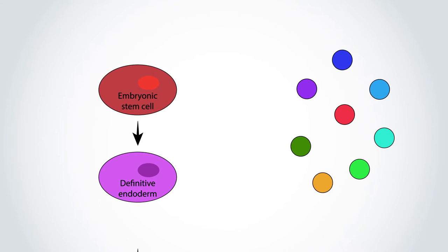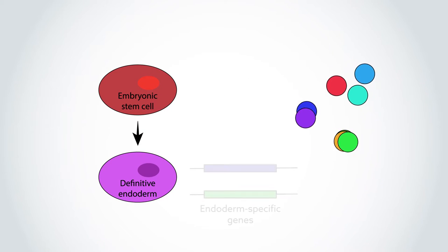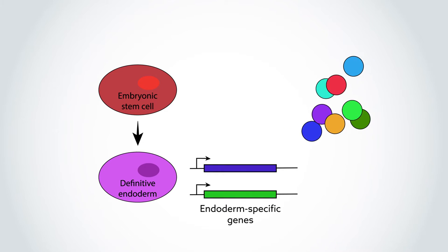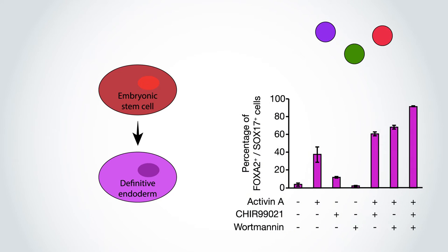They tested eight growth factors and small molecules in various combinations and concentrations, looking for cells that responded by expressing two key genes typical of endoderm. The scientists identified a trio of compounds that together converted more than 90% of cells in 2D culture.